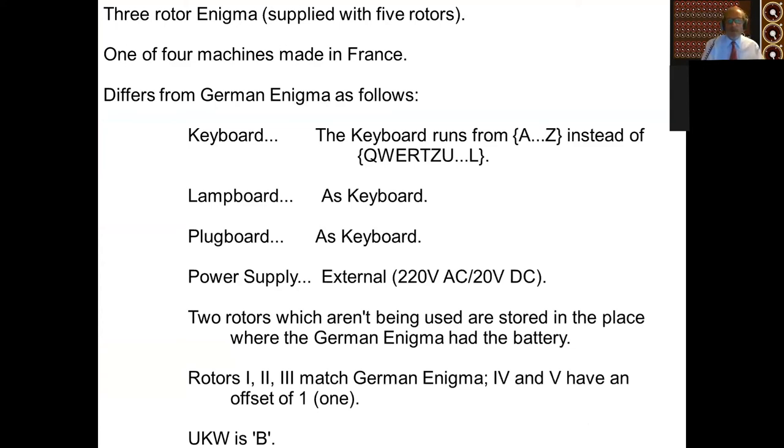So it differs from German Enigma. Keyboard, as I've said, A to Z, rather than Q-W-E-R-T-Z-U etc. Lamp board, same as the keyboard, plug board, same as the keyboard. It runs on an external power supply of either 220 volts AC or 20 volts DC. It's a three rotor machine, but it comes with five rotors and the two rotors which aren't being used are stored in the place where the German Enigma had its battery. The wheels have had to be wired from the best information available at the time after the Polish mathematicians and engineers had cracked the Enigma. So, as it happens, wheels one, two, and three are the same as the German Enigmas, but four and five have an offset of one. And this particular machine has the Umkehr-Walze, the reflector, set to B.